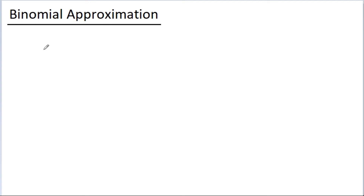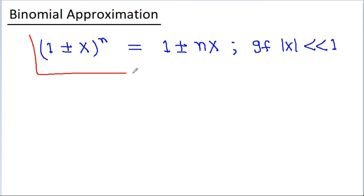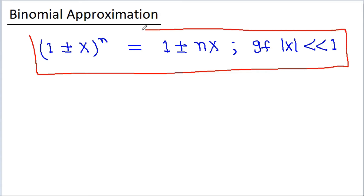According to binomial approximation, (1 ± x)^n is equal to 1 ± nx if |x| is much less than 1. I will also prove it later, but first let's take some examples.